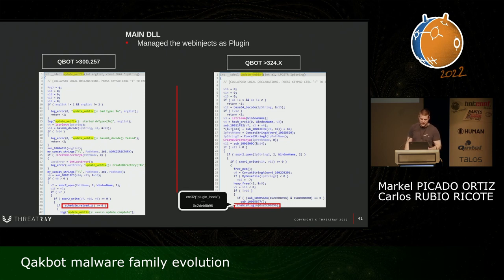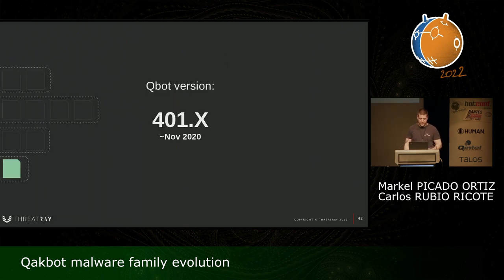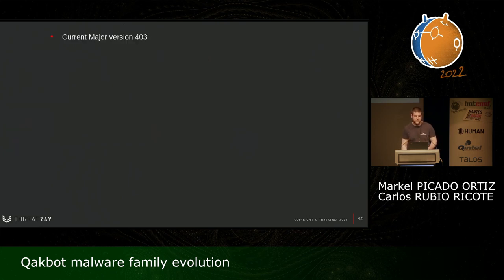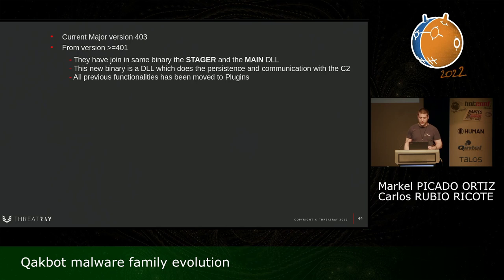Qbot uses CRC32 hashes of the plugin name in order to manage internally the storage of the plugin. If you translate the CRC32 hash to a string, it matches with 'plugin_hook,' which makes sense. Finally, in the new version released in November 2020, they removed the stager, joining the functionality of the stager into the main DLL. The current major version is 403. From version 401, the functionality of the stager has been merged into the main DLL. Previous functionalities have been moved to plugins, such as web injects, password grabber, proxy, et cetera.